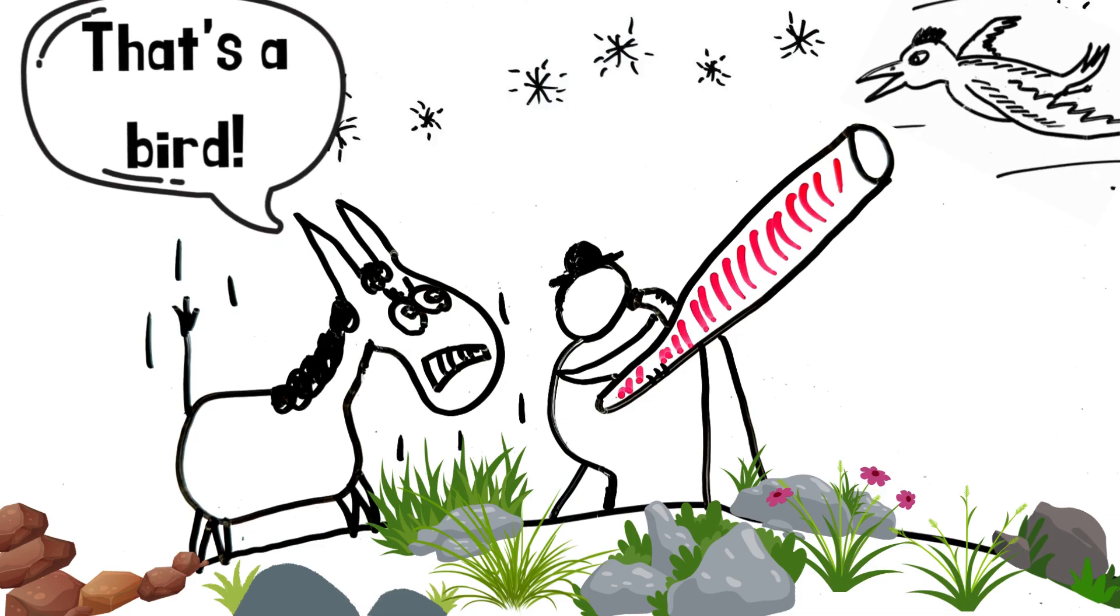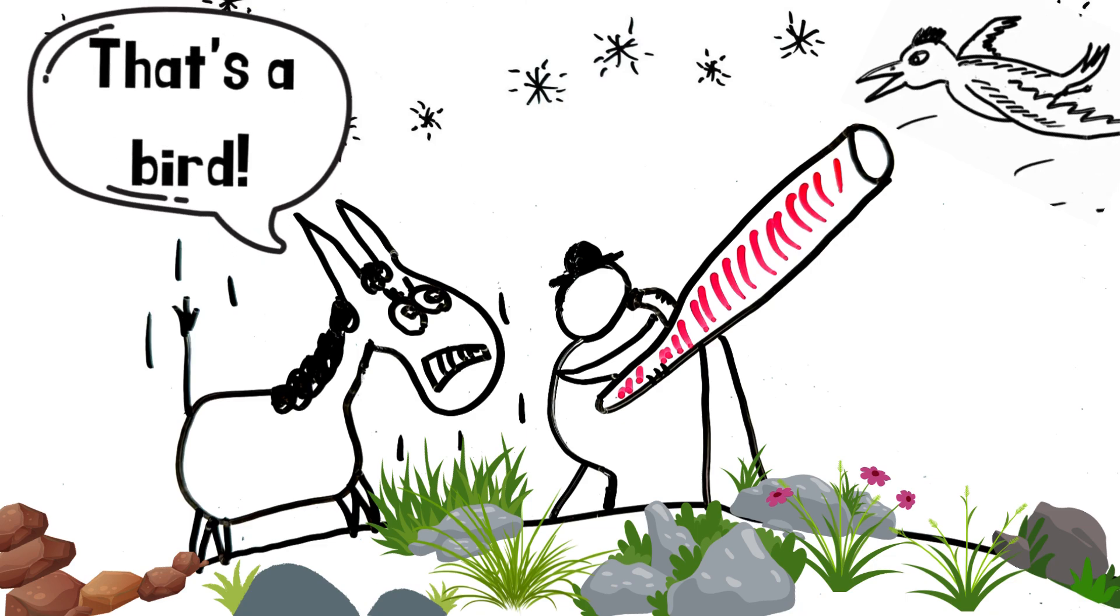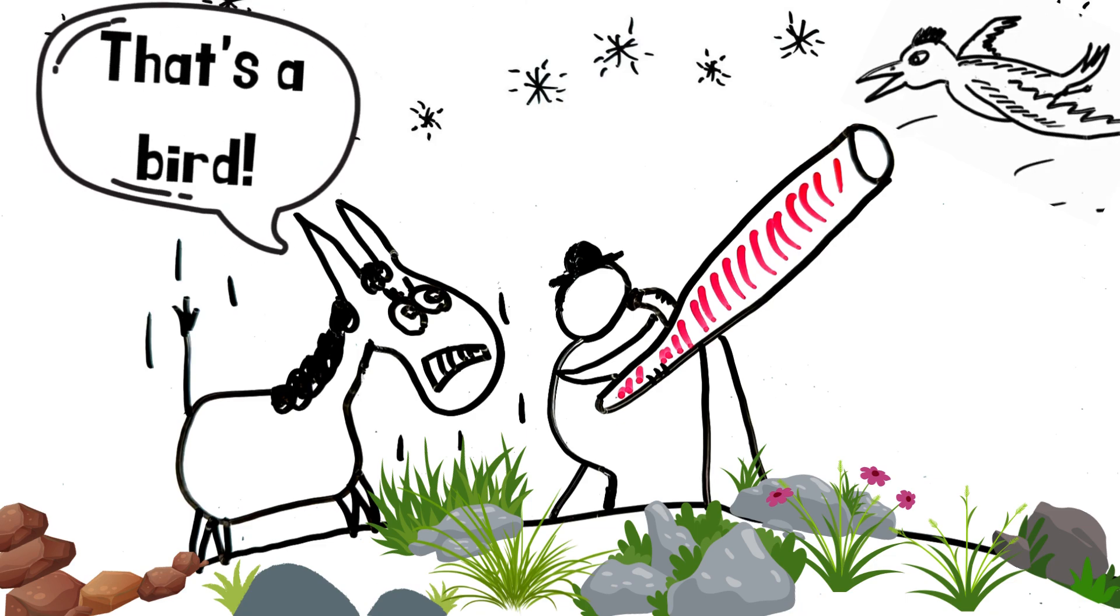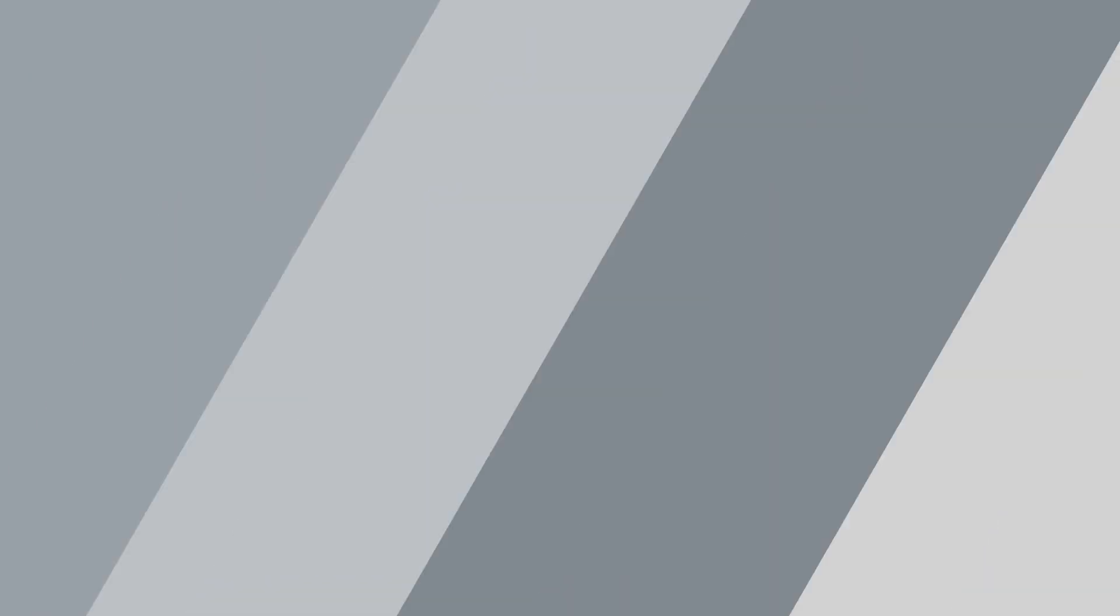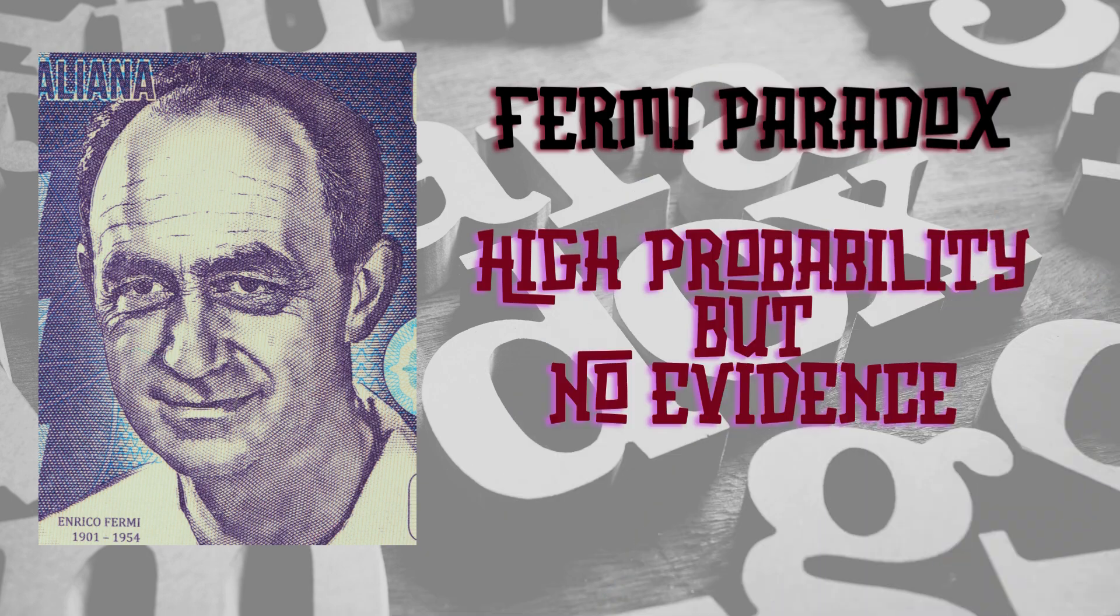However, despite such a high probability, there is no definitive evidence that extraterrestrial life exists. And this is the Fermi paradox.